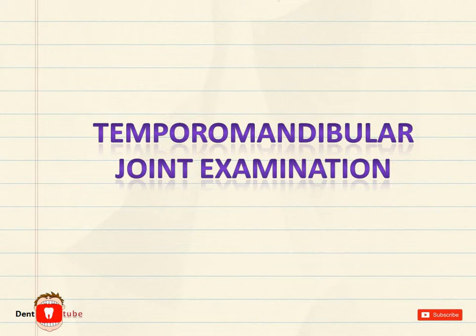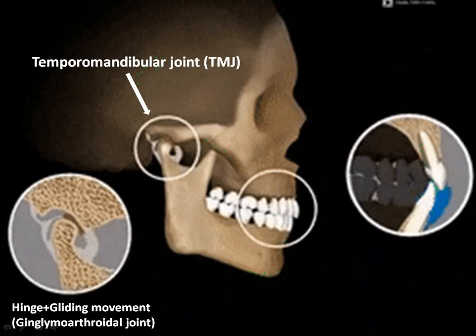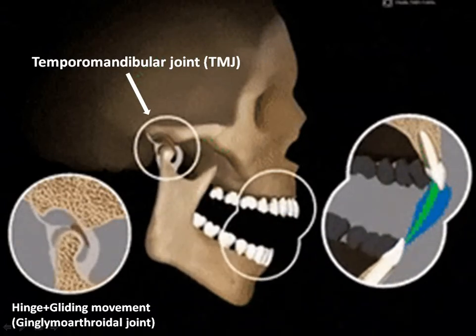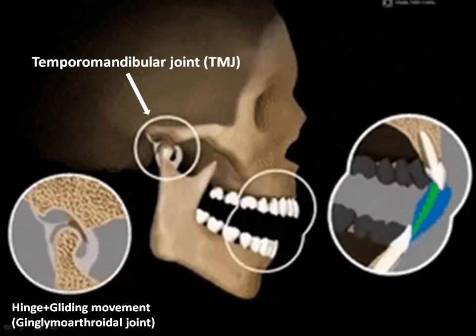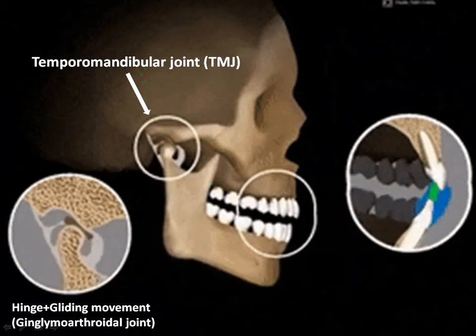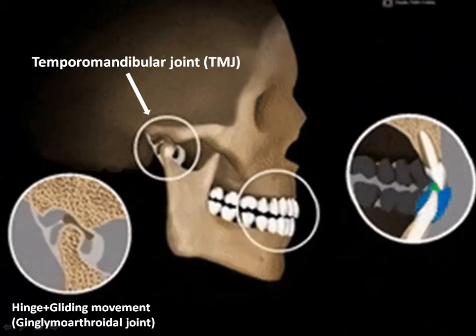Temporomandibular Joint Examination. The temporomandibular joint, familiar as TMJ, is the joint between the temporal bone and the mandible. The TMJ is capable of a combination of both hinge and sliding movement. Hence it is also known as a ginglymoid-arthrodial joint — ginglymo meaning hinge-like movement and arthrodial meaning gliding movement.